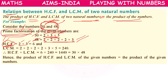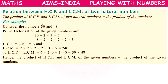So, taking the common prime factors the least number of times and multiplying them: 2 × 3 = 6. The HCF of 30 and 48 is 6.